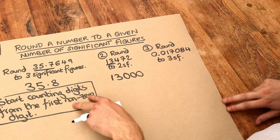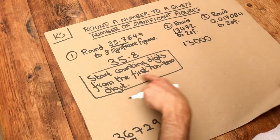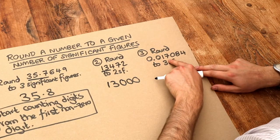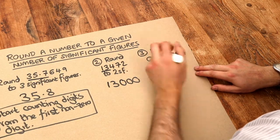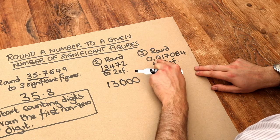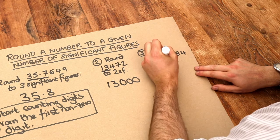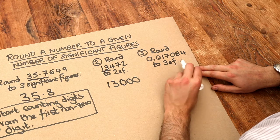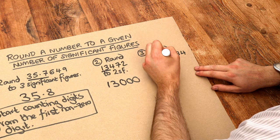Now the last one. Remember we start counting from the first non-zero digit. Now the first non-zero digit here is that one there. We don't count this zero. We don't count that leading zero. But we do count from here. And we want three of those digits. Three significant figures. So one, two, three.